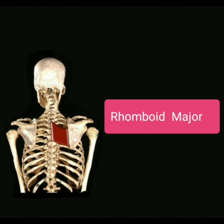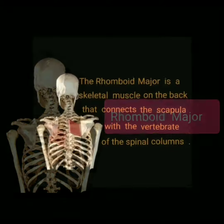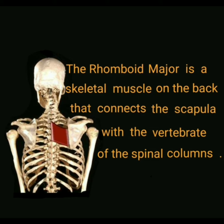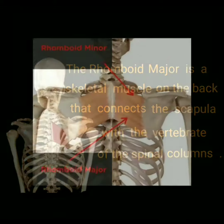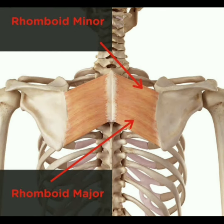Welcome to this video on the anatomy of the rhomboid major muscle. The rhomboid major is a skeletal muscle on the back that connects the scapula with the vertebrae of the spinal column. This image marks both rhomboid muscles — rhomboid major and rhomboid minor.